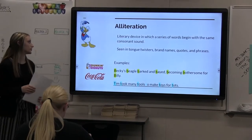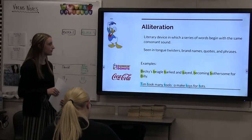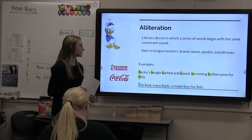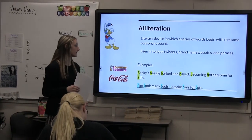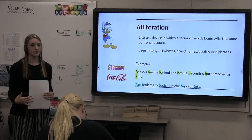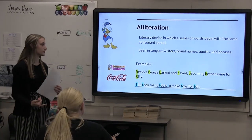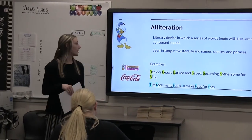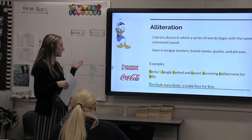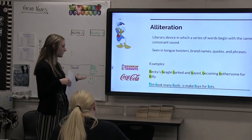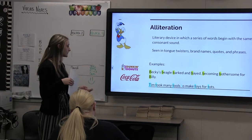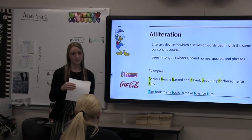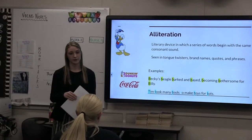The next device is alliteration. Alliteration is a literary device in which a series of words begins with the same consonant sound. This is seen a lot in tongue twisters, brand names, quotes, and phrases. Up here we have Donald Duck, Dunkin' Donuts, and Coca-Cola — those are all examples of alliteration.